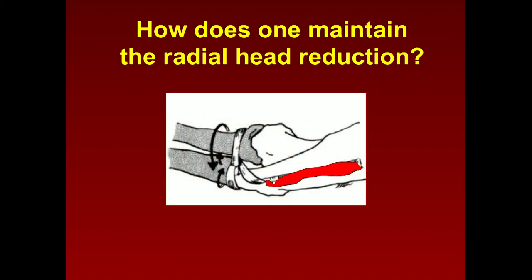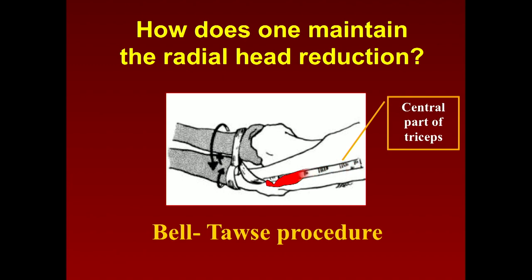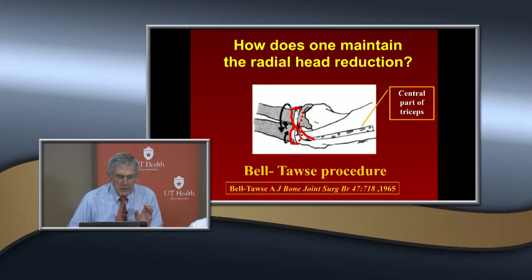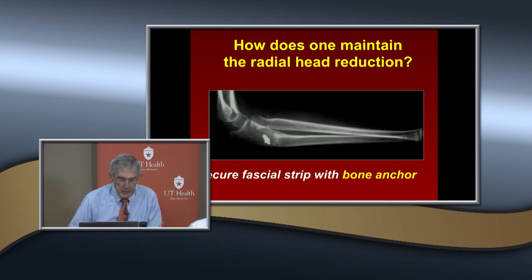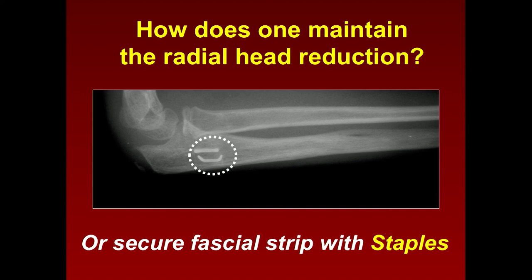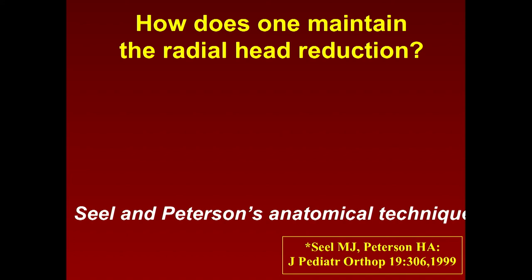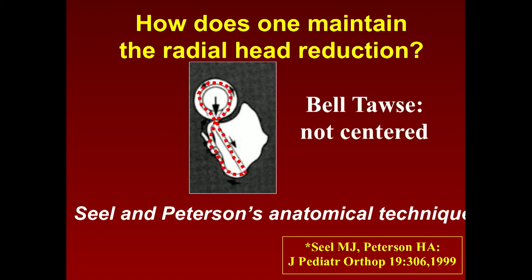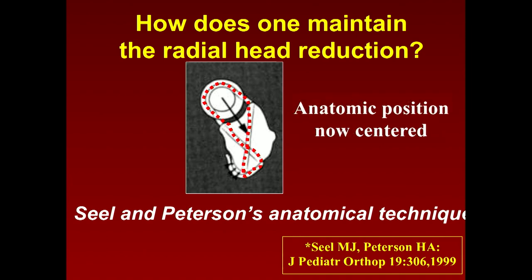Whose procedure is this? It came out of England — this is the Bell-Tawse procedure, where you use the central part of the triceps to reestablish the annular ligament. The problem with my experience using this is that it will hold the radial head in but you get a little limitation of supination and pronation — some scarring. You can pass it through a hole in the ulna, secure it with a bone anchor, or use mini staples. Peterson said the Bell-Tawse is not anatomic because it doesn't really centralize it like it should, and he described a more anatomical repair.